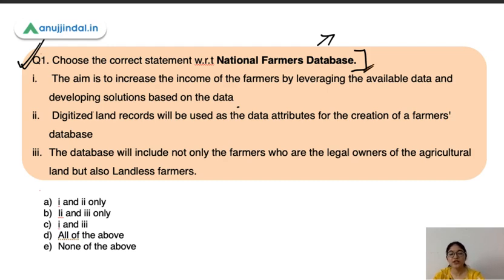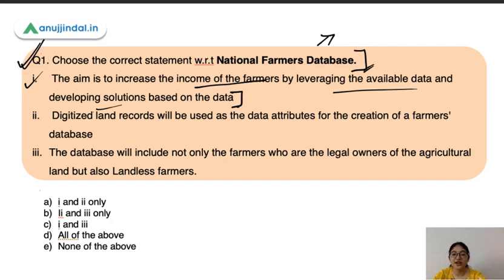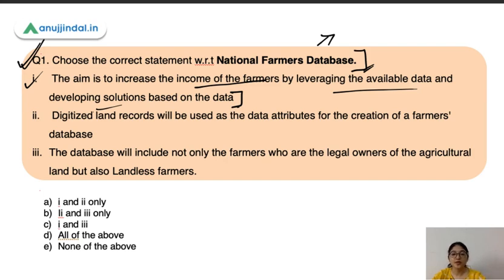The first statement is: the aim is to increase the income of farmers by leveraging the available data and developing solutions based on it. Farmers' digitalized land records would be collected, and based on this data, different provisions and services would be provided to farmers to increase their income. This statement is correct.